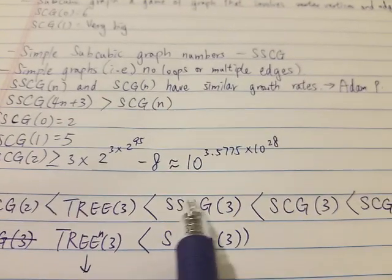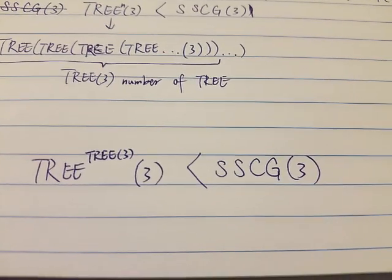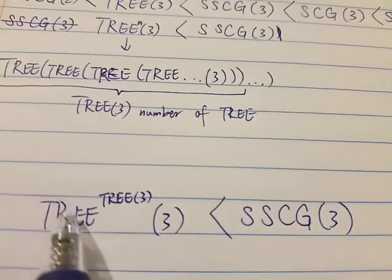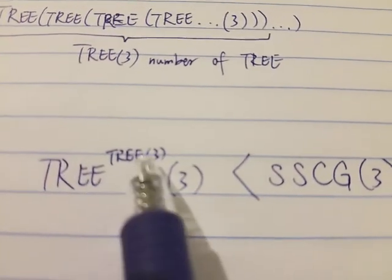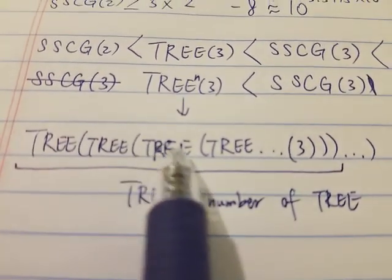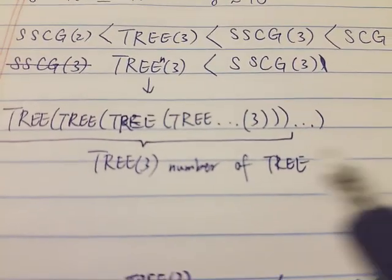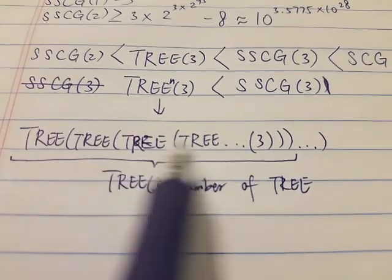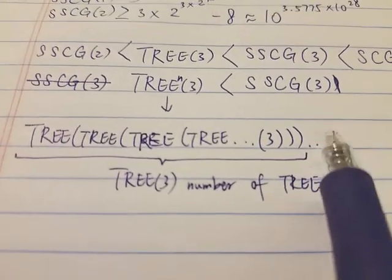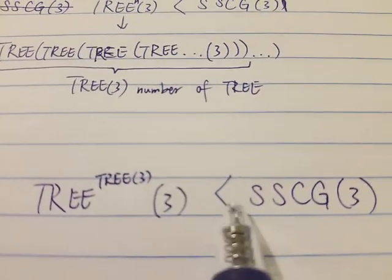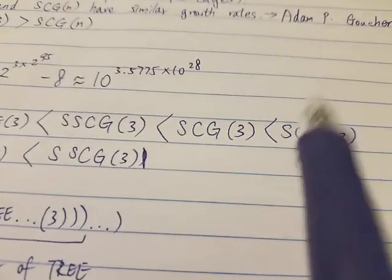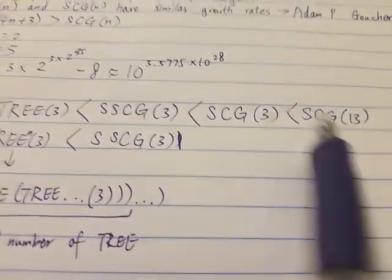To give you an idea of how big SSCG is: even if you do TREE(TREE(TREE(... of 3 ...))) — nesting TREE(3) a TREE(3) number of times — that output is still much, much, much smaller than SSCG(3). So now can you imagine how big SCG(13) is, or just how big this sequence is in general?